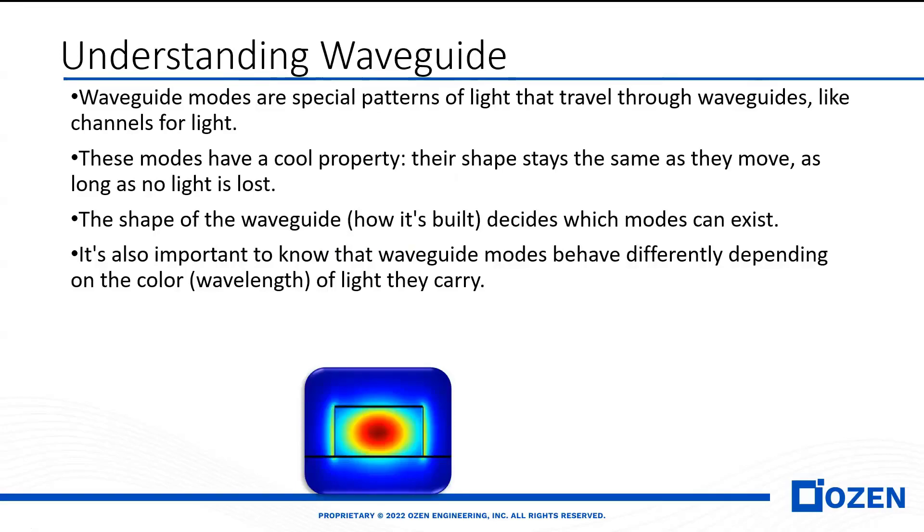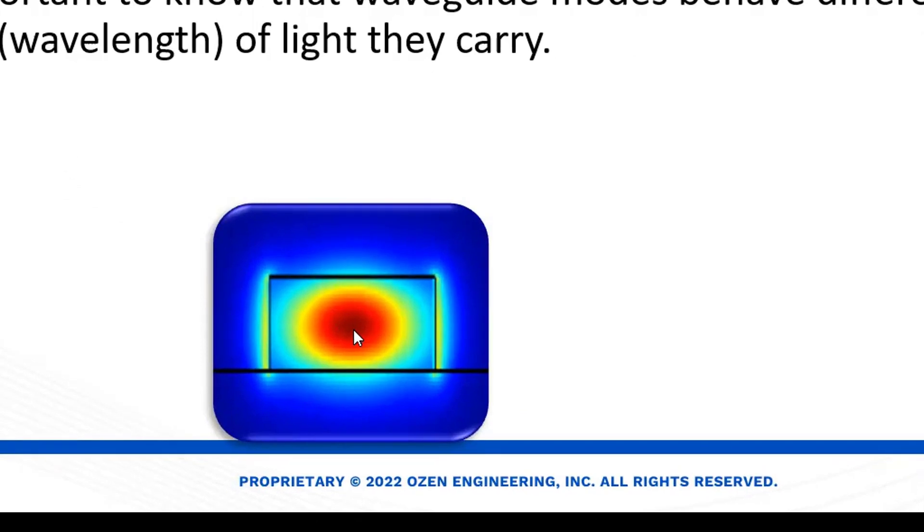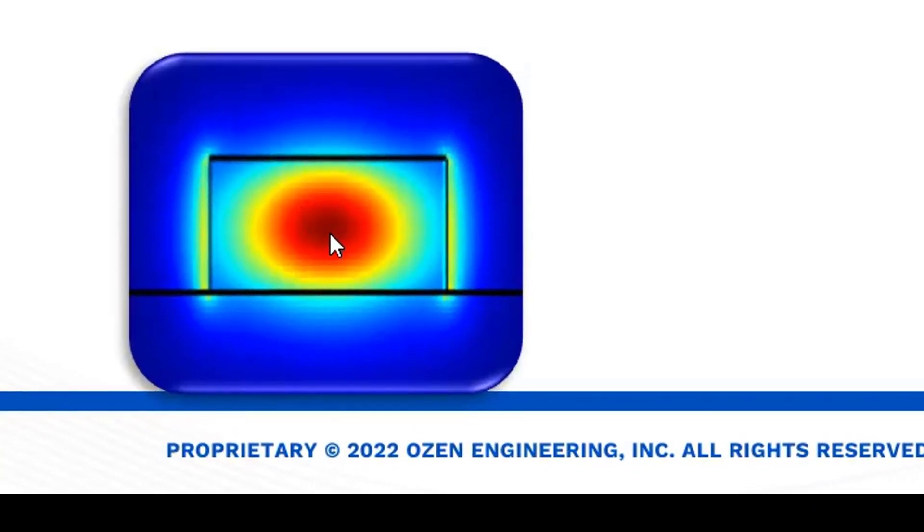The first thing we need to know in the waveguide is waveguide modes. As you see in this picture, red shows higher intensity and blue shows lower intensity. As we see, this is our waveguide, so the light confines through the waveguide.